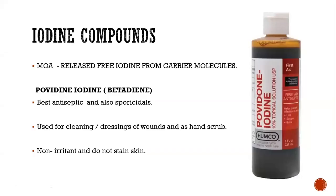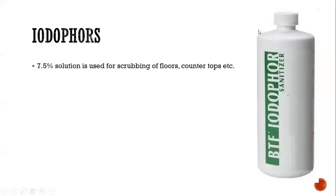The next category is iodine compounds. The mechanism of action is release of free iodine from carrier molecules. The best example is povidone-iodine, better known as betadine. It is the best antiseptic and also has sporicidal activity to some extent. It is used for cleaning of wounds and scrubbing of hands. As it is non-irritant and does not stain skin, it is widely used nowadays. Iodophor in a concentration of 7.5% solution is used for scrubbing of floors, countertops, and washroom sinks.